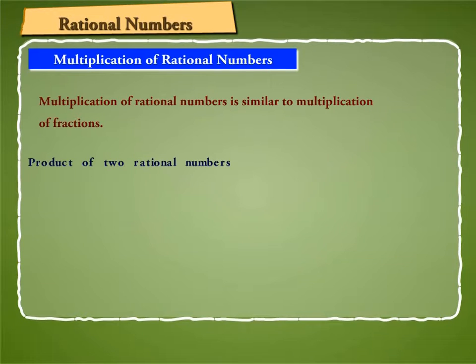Thus, product of two rational numbers is equal to product of their numerators by product of their denominators.